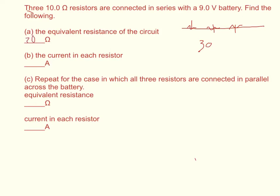And then the current running through each. You know that delta V equals I times R, the current times the resistance. So we just divide the voltage by the resistance and we get I equals 9 volts divided by 30 ohms. 9 over 30 equals 0.3 amps.